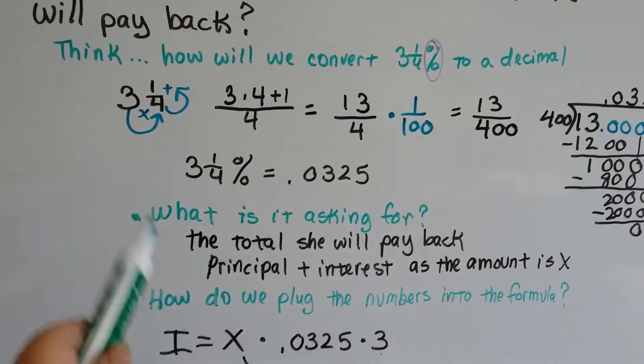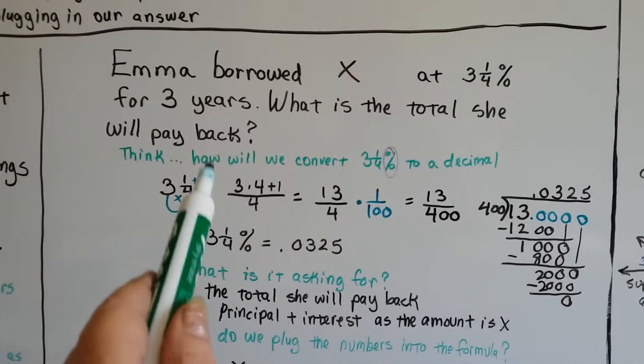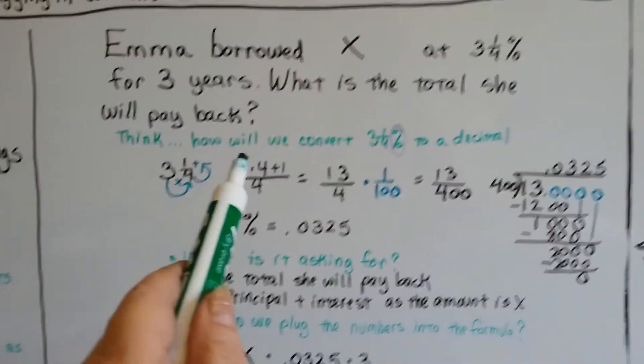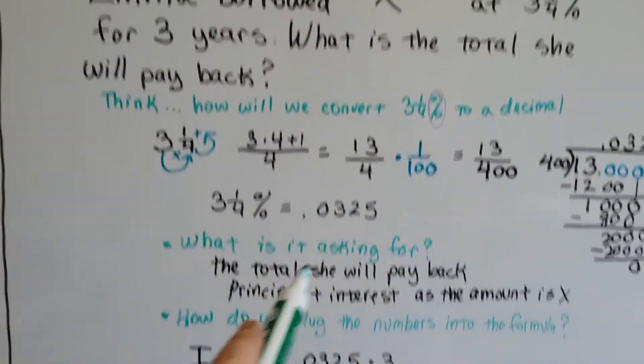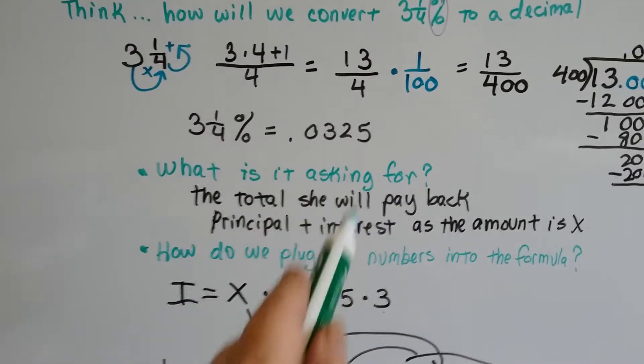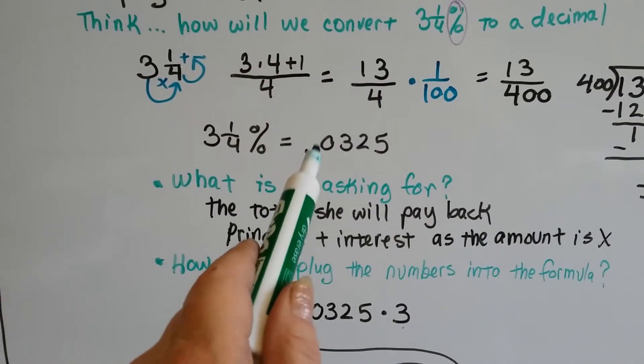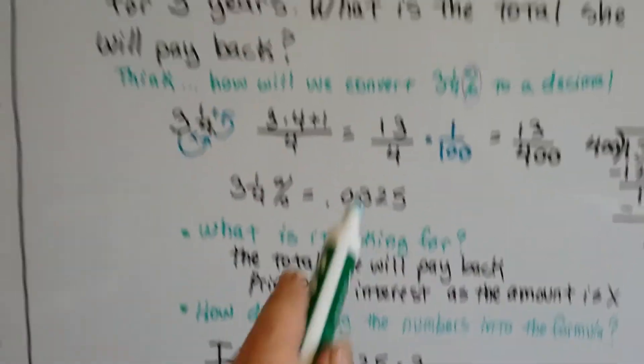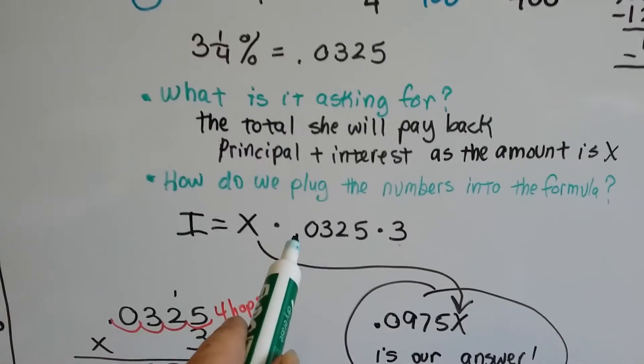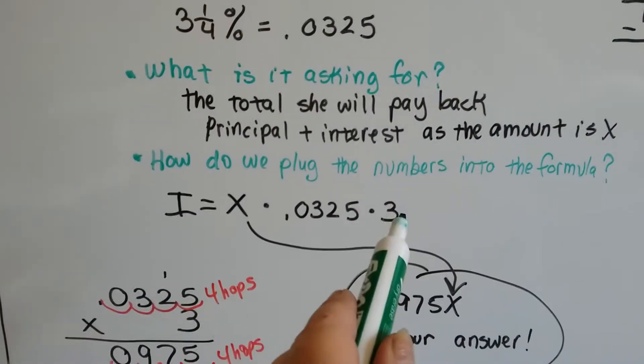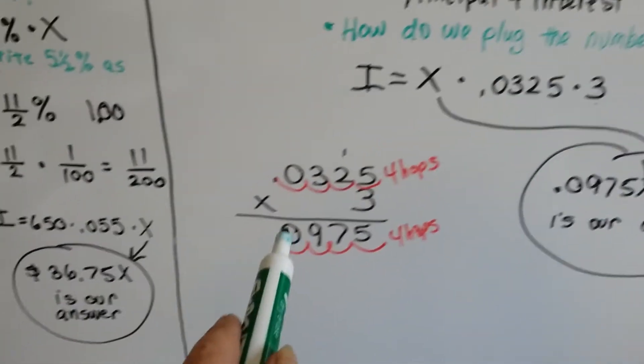So, what is it asking for? It's asking for the total she will pay back. So that means we need the total amount, x, and whatever the interest is. So we know that the interest is .0325. We know that she did it for 3 years. So we need to multiply the .0325 times the 3 years. And we do.